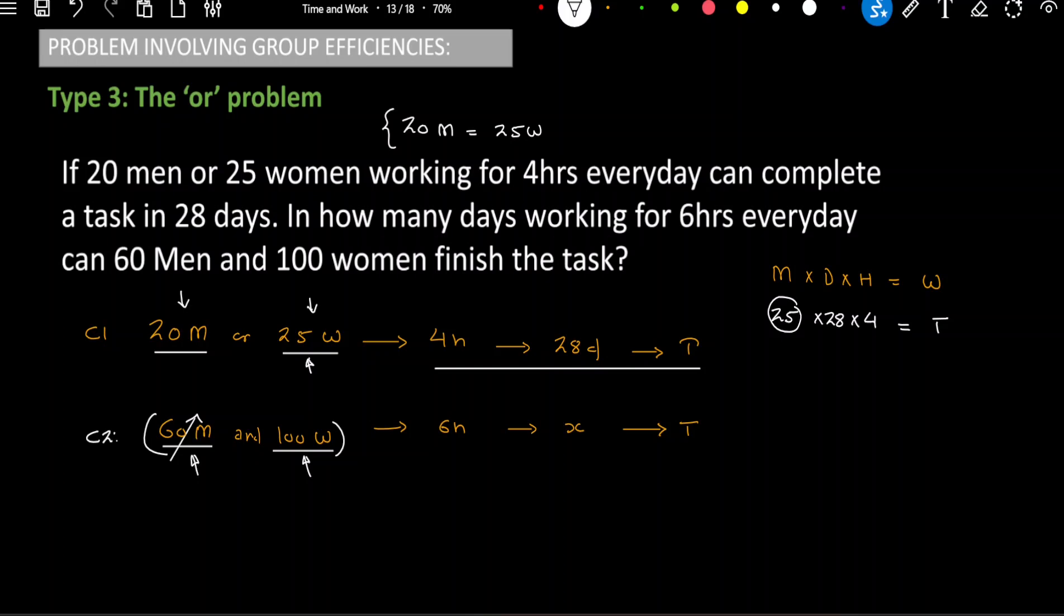So, if 20 men, to replace them I need 25 women. But in reality, I want to replace 60 men. Find the relation. 60 is 3 times of 20. So, let me do the same thing in the right hand side. So, if I want to replace 60 men, how many women are needed? 75 women.